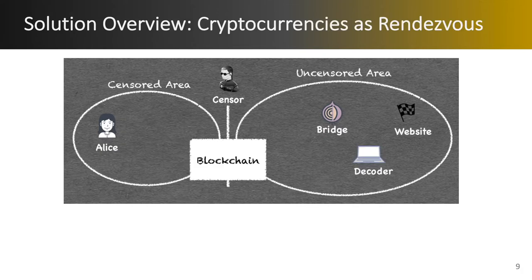What we propose in this work is to introduce blockchains as a new rendezvous for retrieving bootstrapping information. In this scenario we have another entity called the decoder that sits in the uncensored region and helps censored users in obtaining the bootstrapping information. I want to emphasize that we are not claiming this approach should be used over all other options — we are proposing a new medium that can be used orthogonally to all other approaches.